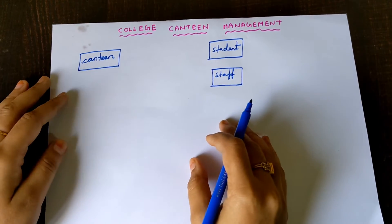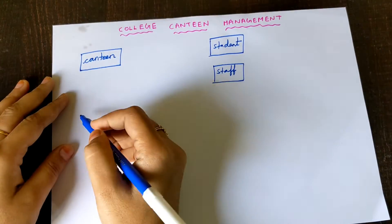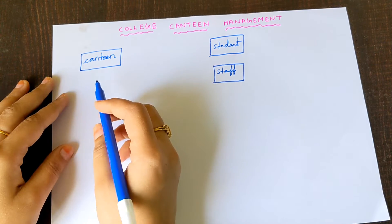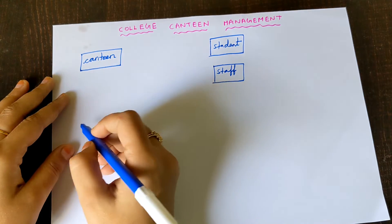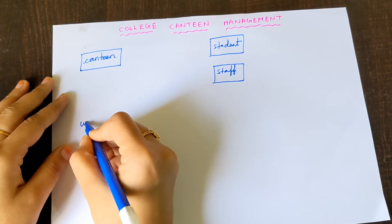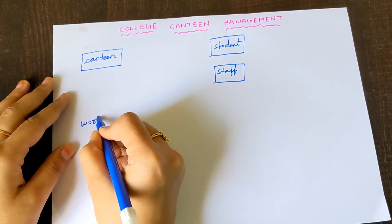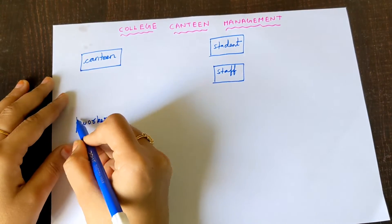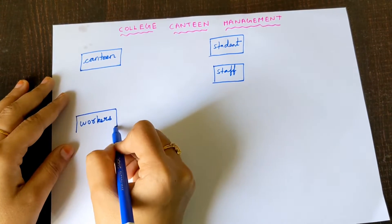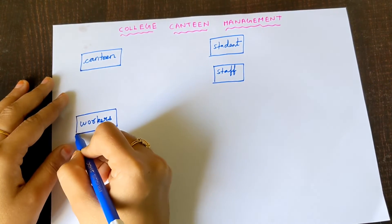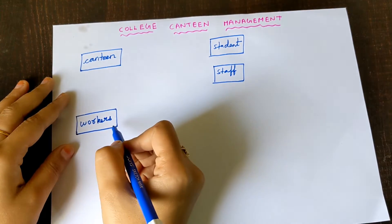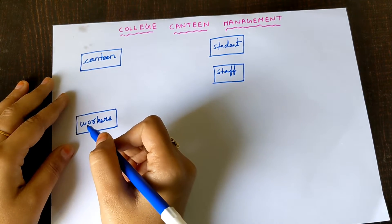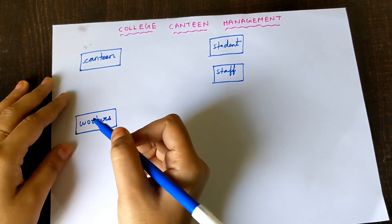Next, Workers. In a canteen, workers will be there. Workers are also persons, and since a person is physically existing, Worker is an entity. We must write it inside a rectangular box.